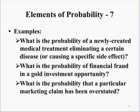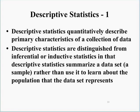Here are some examples of union probabilities: What's the probability of a newly created medical treatment eliminating a certain disease or causing a specific side effect? What is the probability of financial fraud in a gold investment opportunity? What is the probability that a particular marketing claim has been overstated? Having talked about probability, let's turn our attention to descriptive statistics.